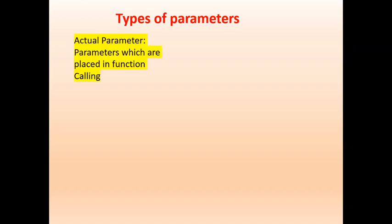Please recollect what are the types of parameters. Parameters are acting as input-output pointers for the functions. To communicate with the functions, we use parameters. Parameters are of two types: formal parameters and actual parameters.